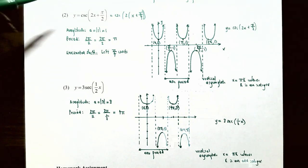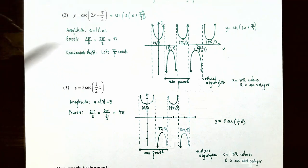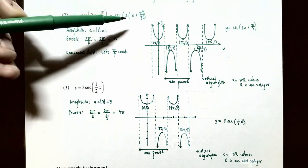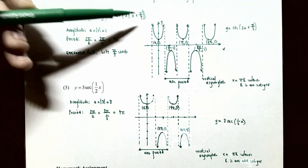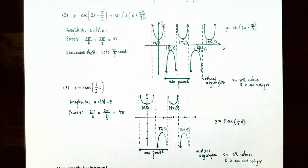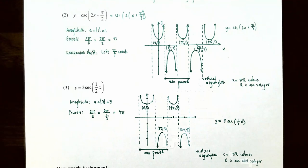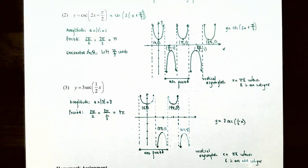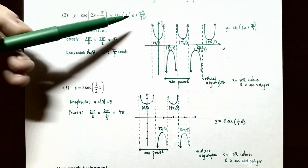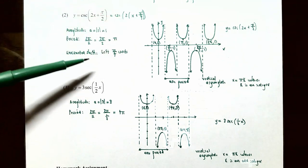Number two: graph y equals cosecant of the quantity 2x plus π/2. Notice it's not just x inside — you have 2 times x plus π/2. Let's factor out the 2 from both terms inside the argument: cosecant of 2 times the quantity x plus π/4, because factoring 2 out of 2x leaves x, and factoring 2 out of π/2 leaves π/4 since 2 times π/4 equals π/2. The amplitude is 1, k equals 2 so the period is 2π/2 equals π, and inside the parentheses it's x plus π/4, so there is a horizontal shift left π/4 units.